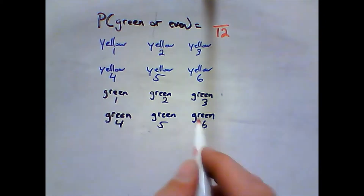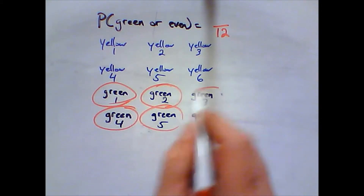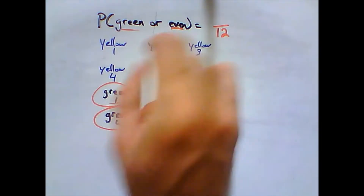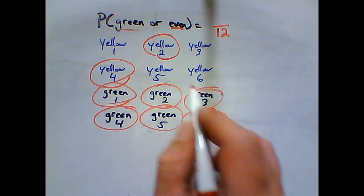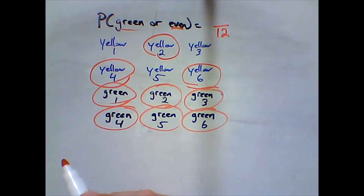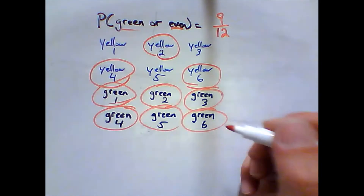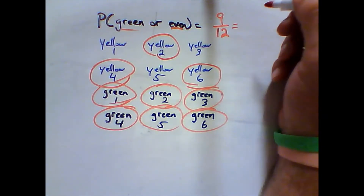We're going to circle everything that would be okay to pick. All of these green ones would be okay because it has to be green or even. This one would be okay — it has an even number. This one would be okay — it has an even number. And that one is okay because it has an even number. How many things did I circle? One, two, three, four, five, six, seven, eight, nine — nine over twelve, which reduces to three over four.